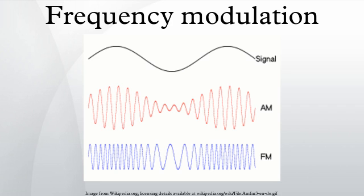In telecommunications and signal processing, frequency modulation is the encoding of information in a carrier wave by varying the instantaneous frequency of the wave.